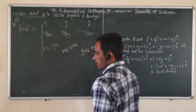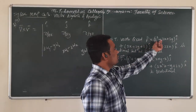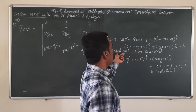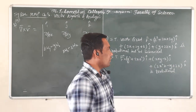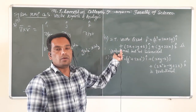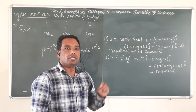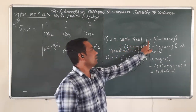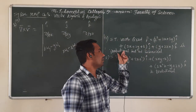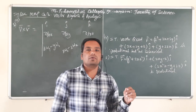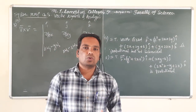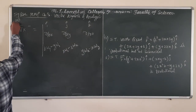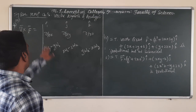Problem four: show that vector F equals (z² + 2x + 3y)·i cap plus (3x + 2y + z)·j cap plus (y + 2zx)·k cap is irrotational but not solenoidal. From the definition of an irrotational vector field, a field is irrotational if curl of the given vector field is zero. A field is solenoidal if its divergence is zero. First, we find curl of F, which equals the determinant with i cap, j cap, k cap in the first row and del/dx, del/dy, del/dz in the second row.